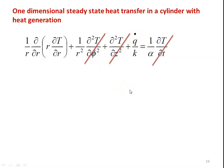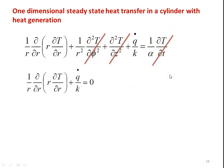This is steady-state heat transfer, so we drop the term for temperature variation with respect to time. The two-dimensional parameters are dropped, and the time parameter also drops. Finally, this is the equation for the present situation: one-dimensional steady-state heat transfer in a cylinder with heat generation.